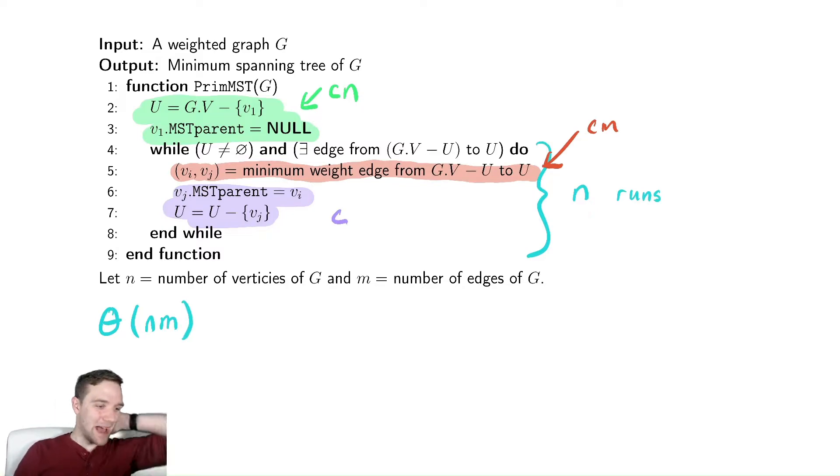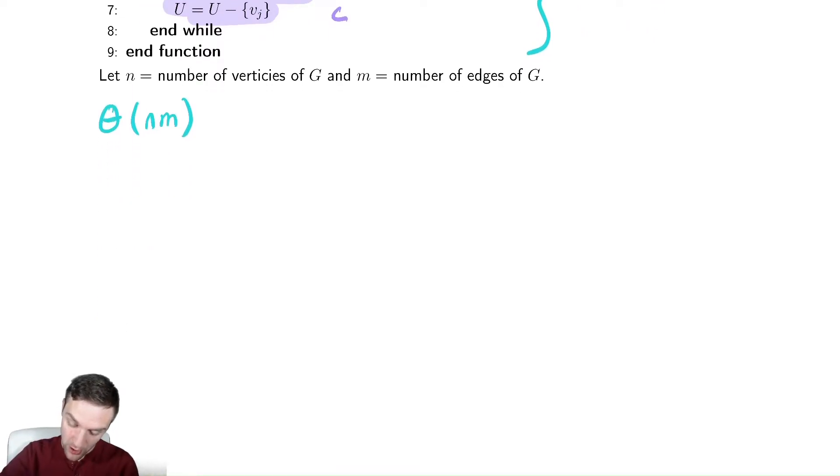That doesn't necessarily look bad or good. It's not very obvious looking at it how good that is. So let's try to remember some stuff we know about the number of edges. M is the number of edges. We showed in our graph algorithm section that a complete graph has n minus 1 times n over 2 edges and a tree, like I mentioned in one of our proofs, has the number of edges minus 1.